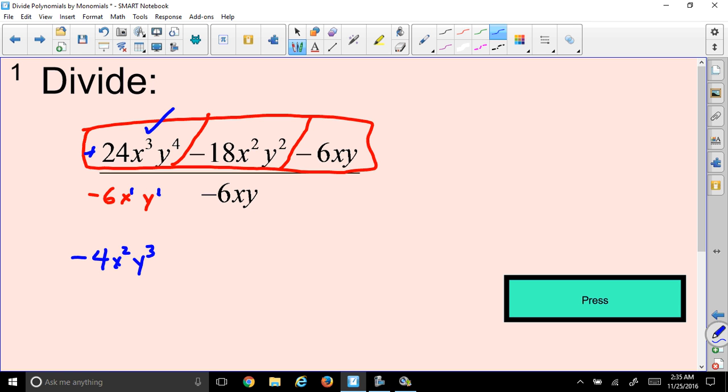Now we're going to do the second part. So we have a negative sign here, and we're going to divide that by this negative. So same signs gives us positive when we're dividing. 18 divided by 6 is 3.